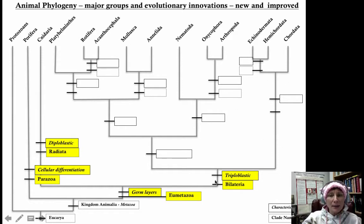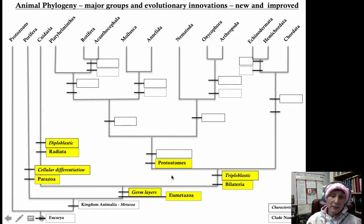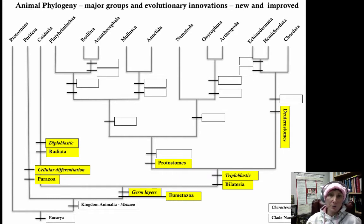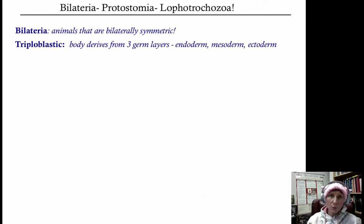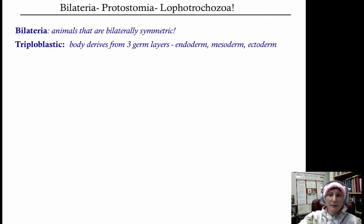Within the bilateria, there are two splits: the protostomes (protostomia) and the deuterostomia. We've already talked about protostomes and deuterostomes. These organisms are derived from three cell layers — triploblastic — so they have an ectoderm, an endoderm, and a mesoderm. The mesoderm is really interesting because you develop muscles from that layer. We've now finally gotten to the tissue-organ level of organization: true tissues for sure, some organs, but not quite well-developed organ systems yet.